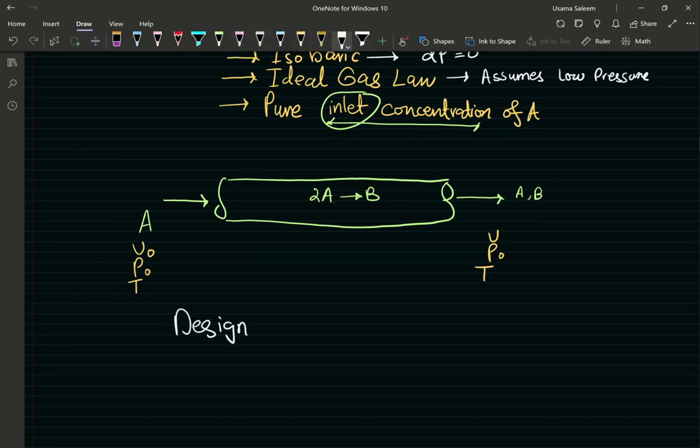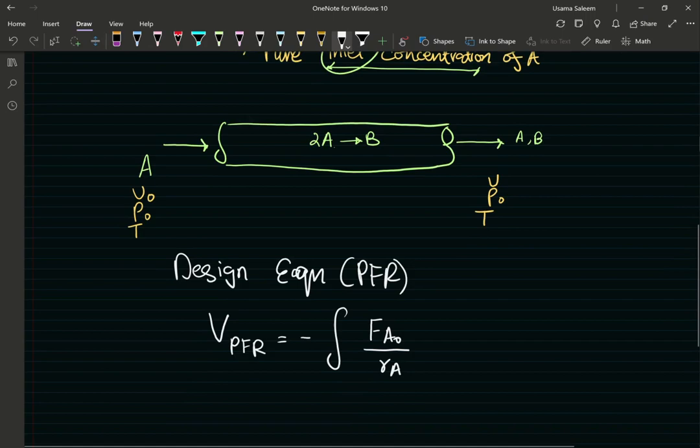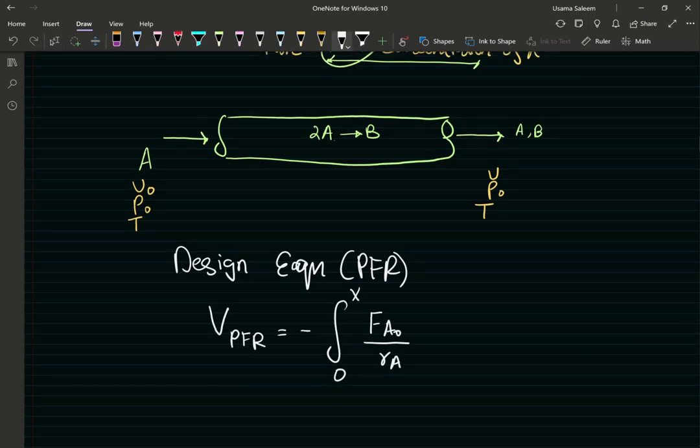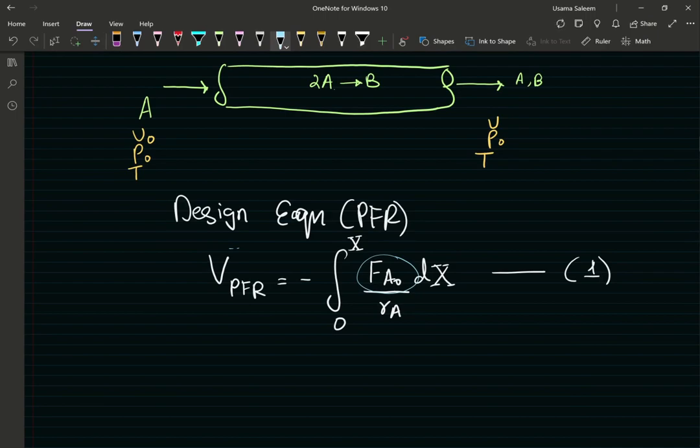So let's move on to our design equation. The design equation for a PFR. We're going to need the design equation for a PFR. And that's going to be V, the volume of PFR is going to be equal to the integral FA0 divided by the rate expression. This obviously goes from 0 to X, the desired conversion, times the integrated with respect to conversion. This is going to be my equation number 1.